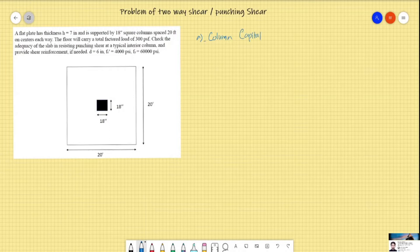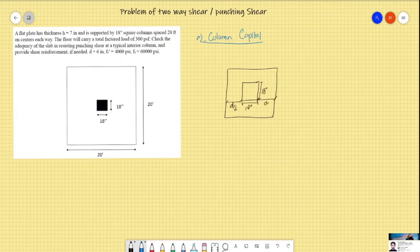First of all, we will solve this problem using the column capital. In order to find the adequacy of the slab, we have to find the critical shear parameter and critical section. If this is a column 18 inches by 18 inches, the critical section will be d/2 from each side. d is given as 6, d divided by 2 is 3, so 18 plus 3 plus 3 is 24 inches. So this is our critical area or critical section.